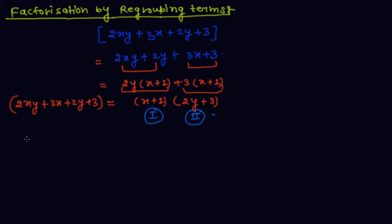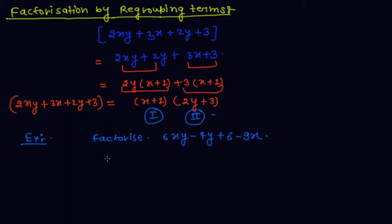Now let's take one more example. Factorize 6xy minus 4y plus 6 minus 9x. The first step is to check if there is a common factor among all terms — there is none.